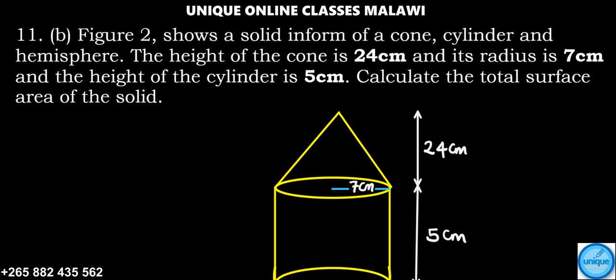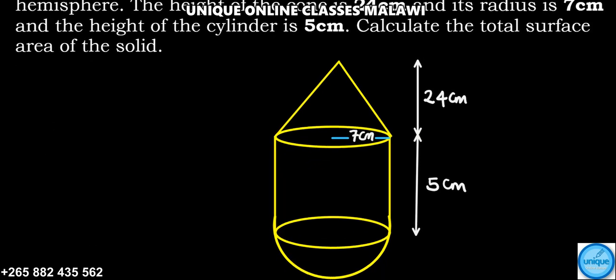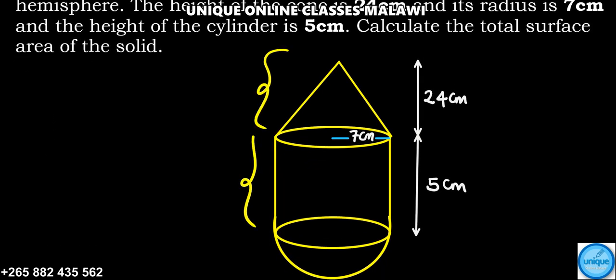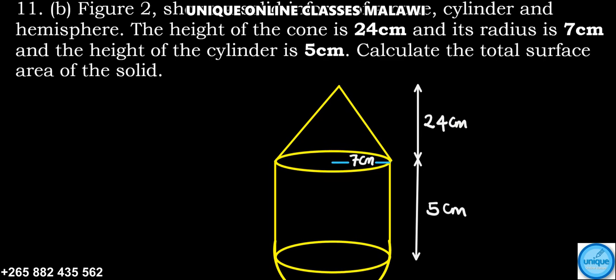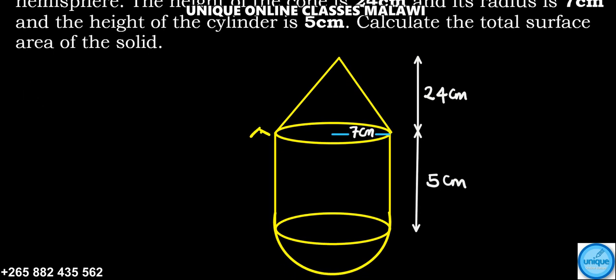Let's see how we can answer this 3D problem. Figure 2 shows a solid in the form of a cone, a cylinder, and a hemisphere. This is the cone, this is the cylinder, and this is our hemisphere. Now, the height of the cone is 24 centimeters from here, and its radius is 7 centimeters. The height of the cylinder is 5 centimeters.